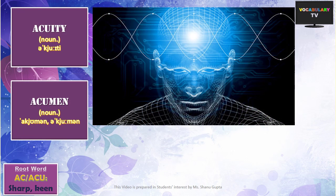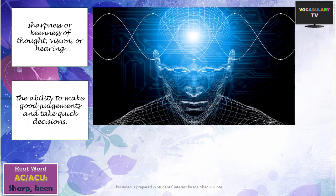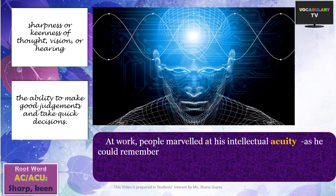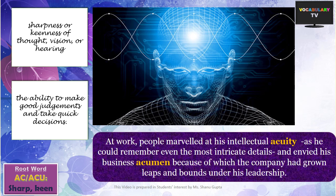Next is ACUITY. If we are talking about the sharpness or keenness of thought, wisdom, or hearing, the appropriate word is acuity. Similarly, ACUMEN refers to the sharpness of judgment and the ability to make good decisions. An example: At work, people marveled at his intellectual acuity as he could remember even the most intricate details, and envied his business acumen, because of which the company had grown leaps and bounds under his leadership.